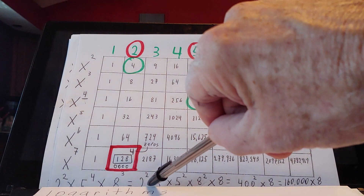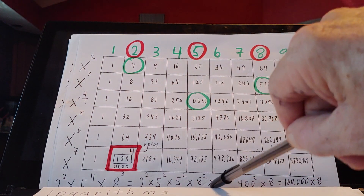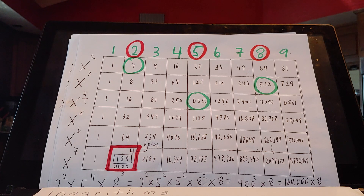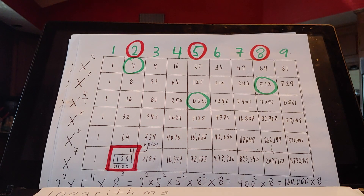Breaking it down until you get to the round numbers. So 2 times 5 times 5 times 8 times 8 — that's 400, and they're all squared, except for that 8. So it's 400 squared times 8. And now you see how we're basically adding and multiplying rather large numbers.